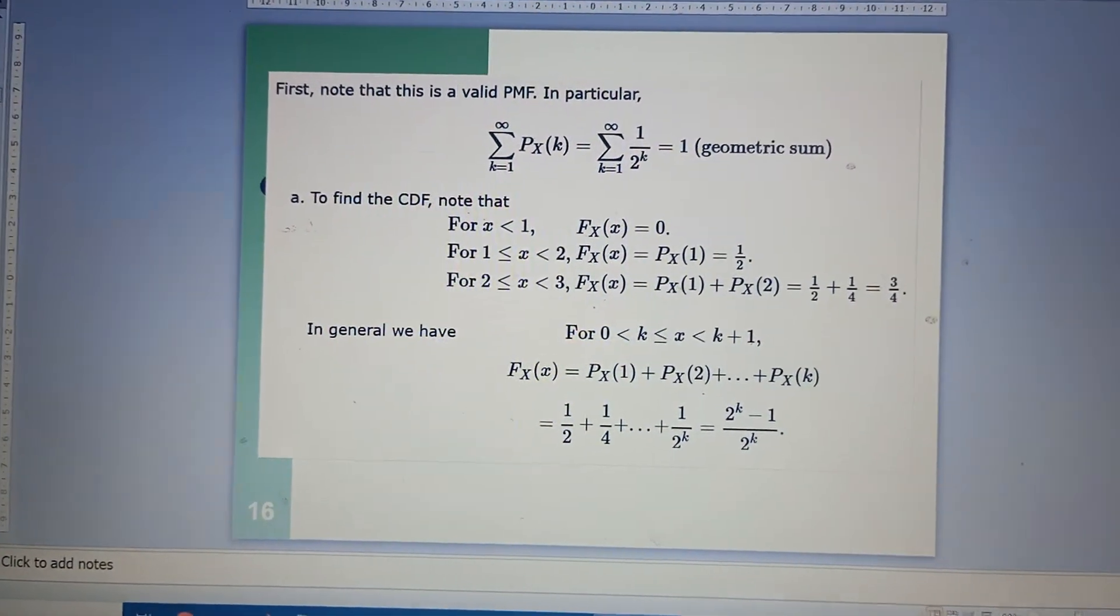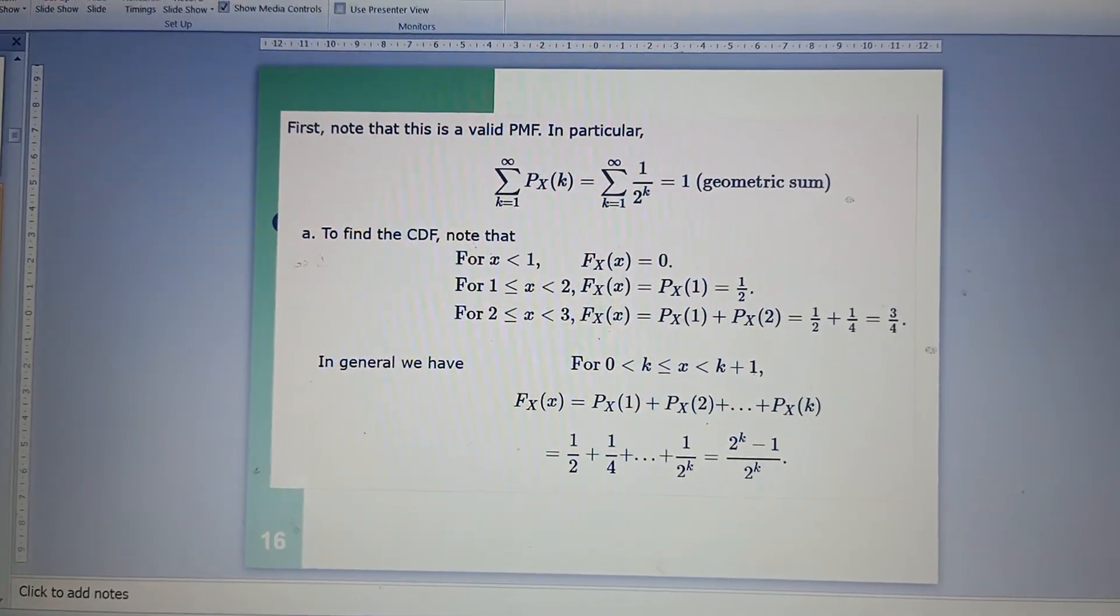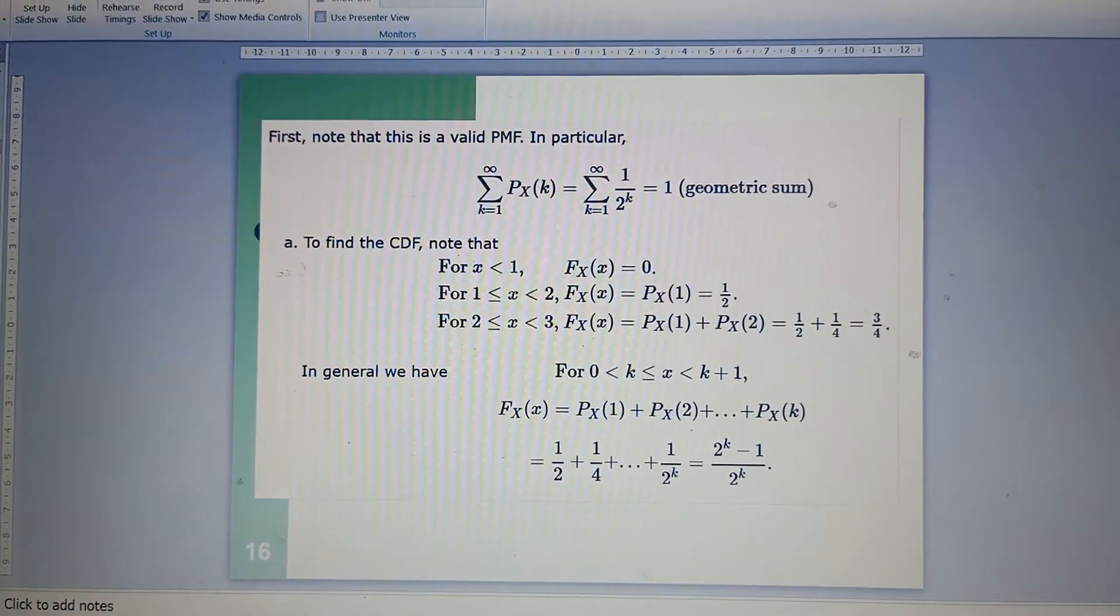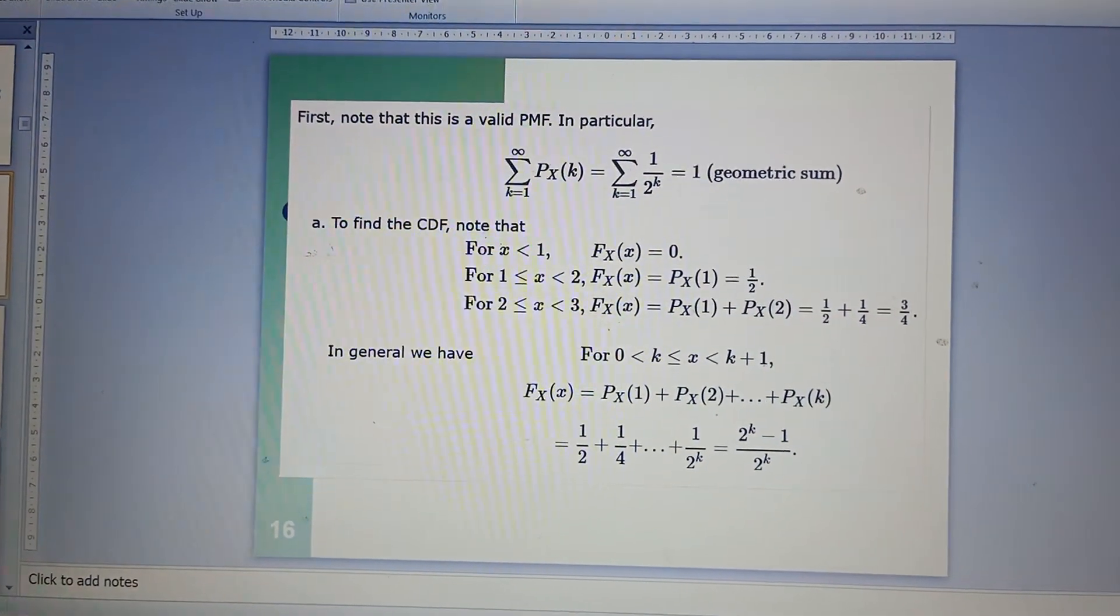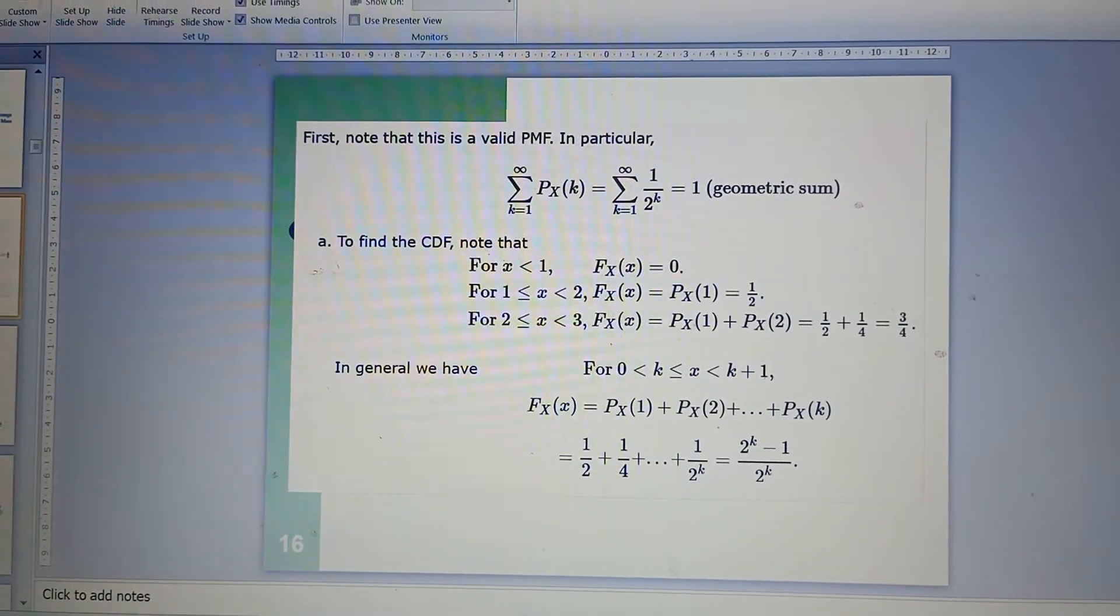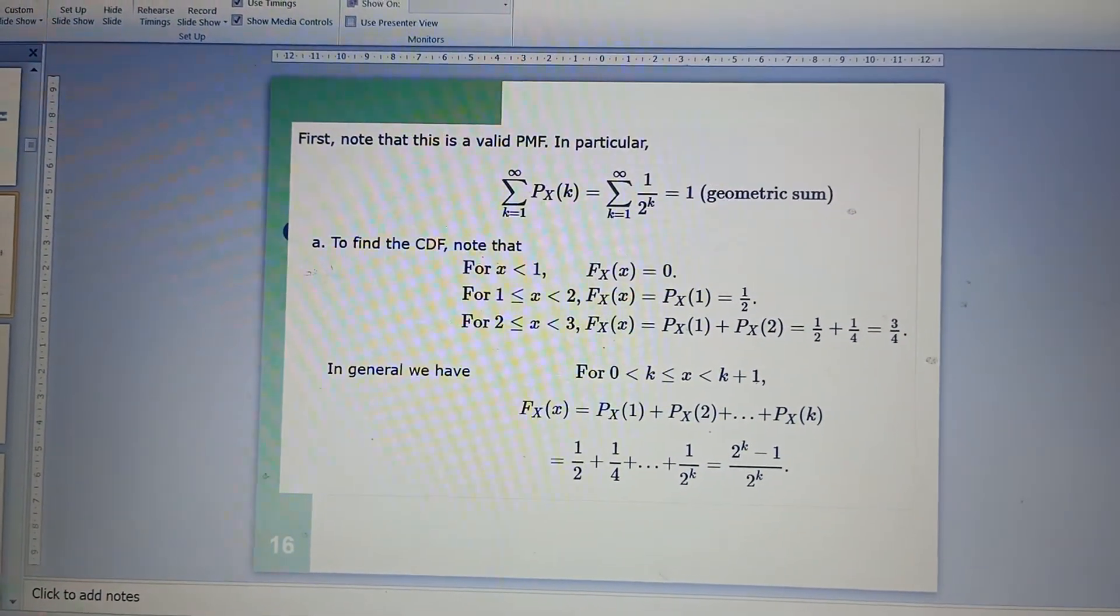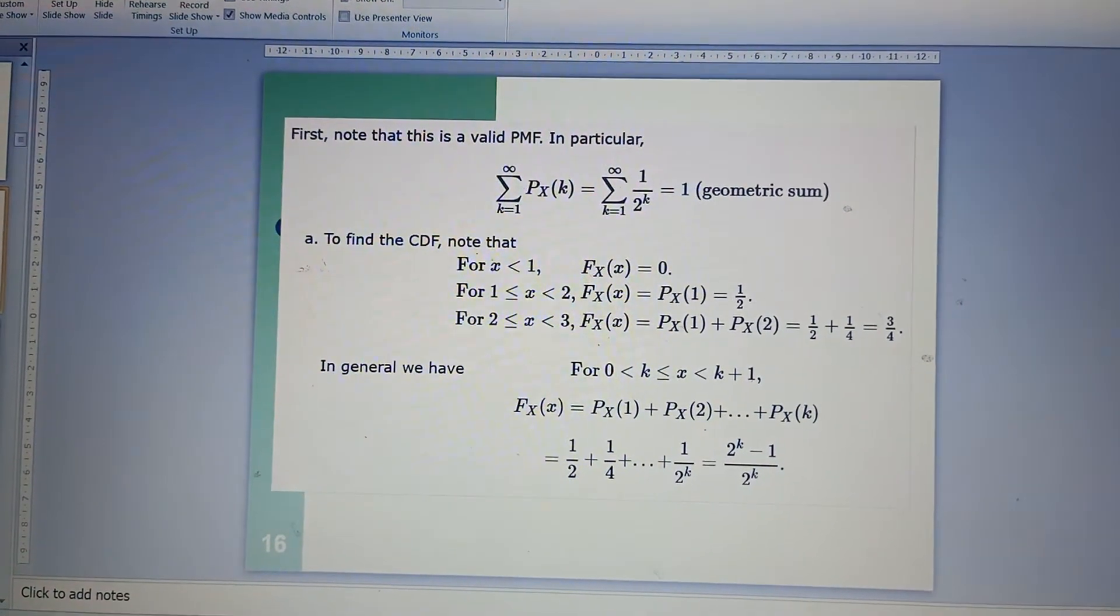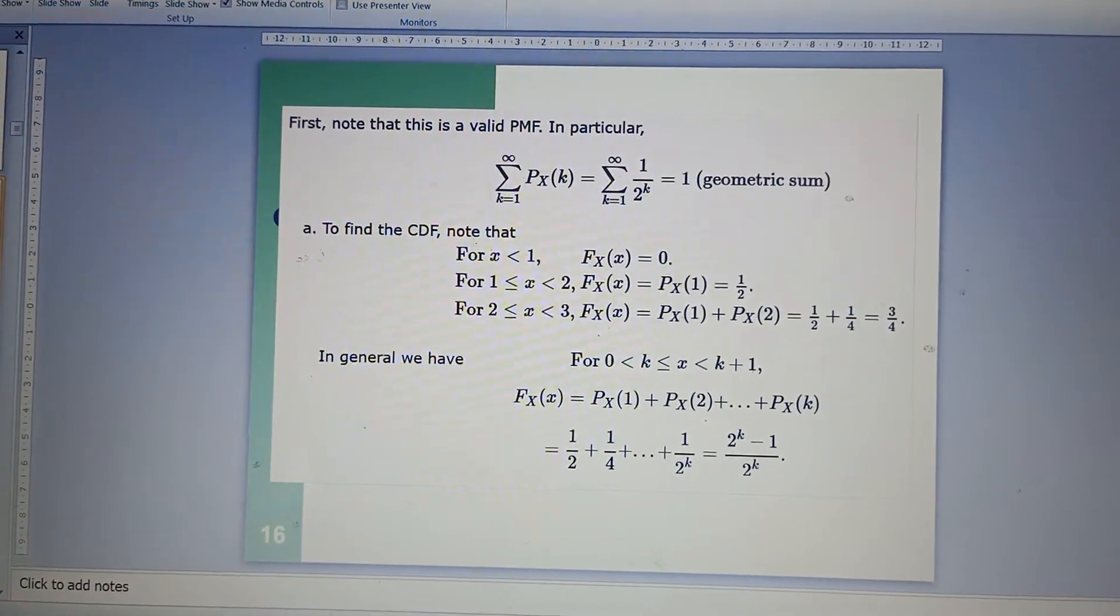This can be summed up or summarized to an equation which is (2^k - 1) divided by 2^k. If k equals 1, 2^1 minus 1 is 1 divided by 2^1, which is 2, so you get 1 by 2. If k equals 2, 2^2 is 4, 4 minus 1 is 3, and 2^2 is 4, so you get 3 by 4, and so on.